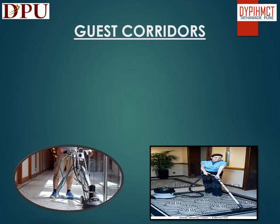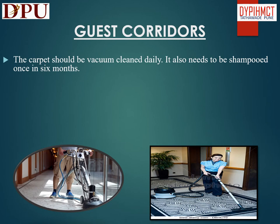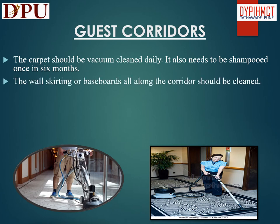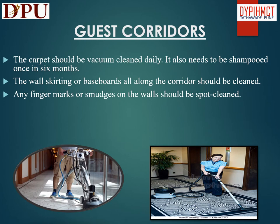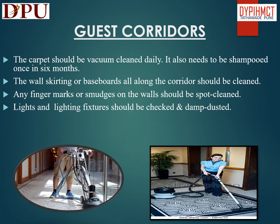In this slide we will discuss about cleaning of guest corridors. The carpet should be vacuumed daily and also needs to be shampooed once in six months. The wall skirting or baseboards all along the corridor should be cleaned. Any finger marks or smudges on the walls should be spot cleaned. Lights and lighting fixtures should be checked and damp dusted. Air conditioning vents should be cleaned weekly.